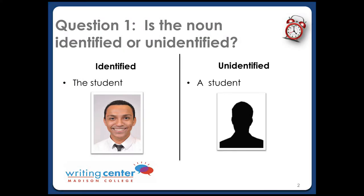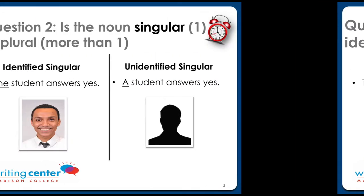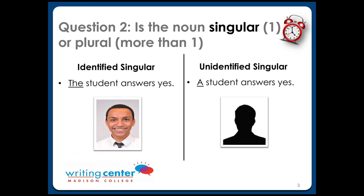Do they want to write about an identified noun or an unidentified one? That's the question the writer must answer. The article the writer chooses clarifies the noun. The second question is this: is the noun singular or plural?